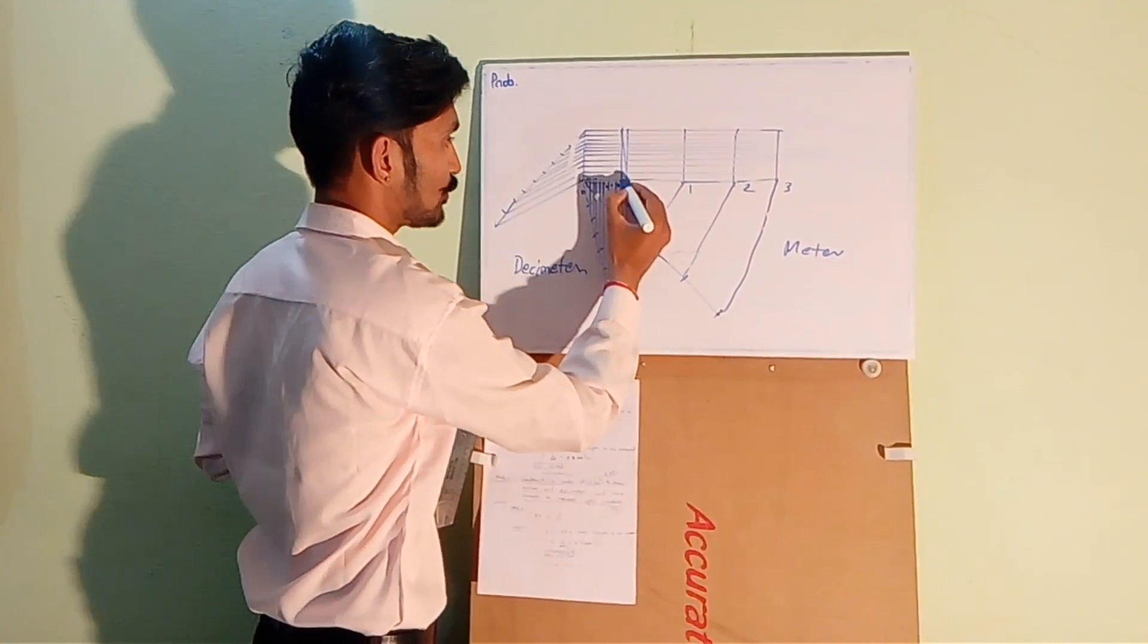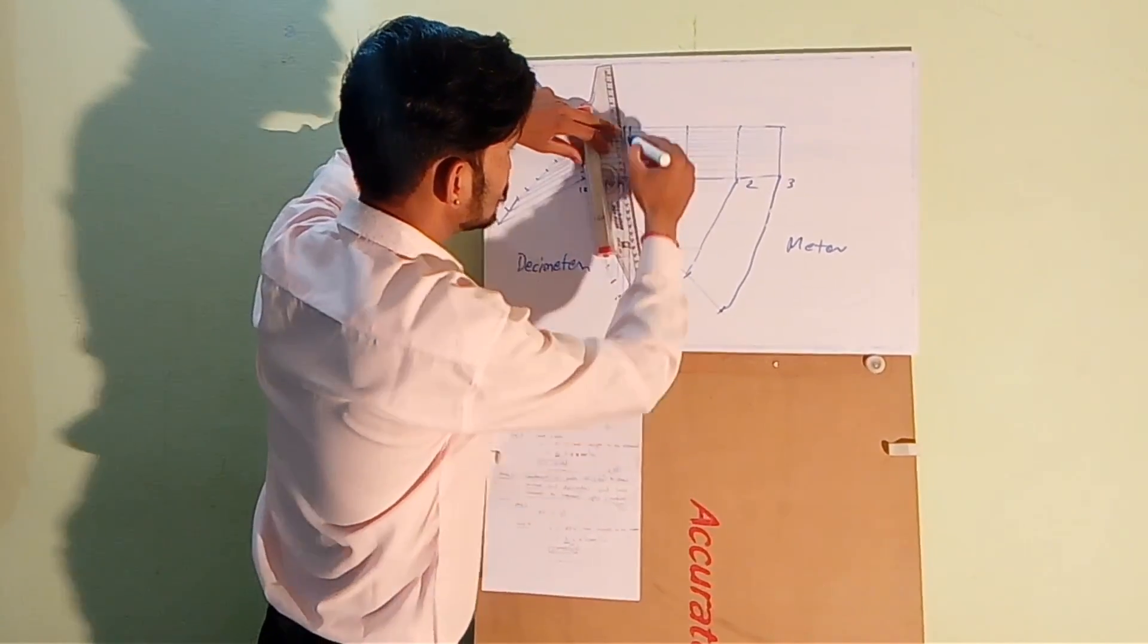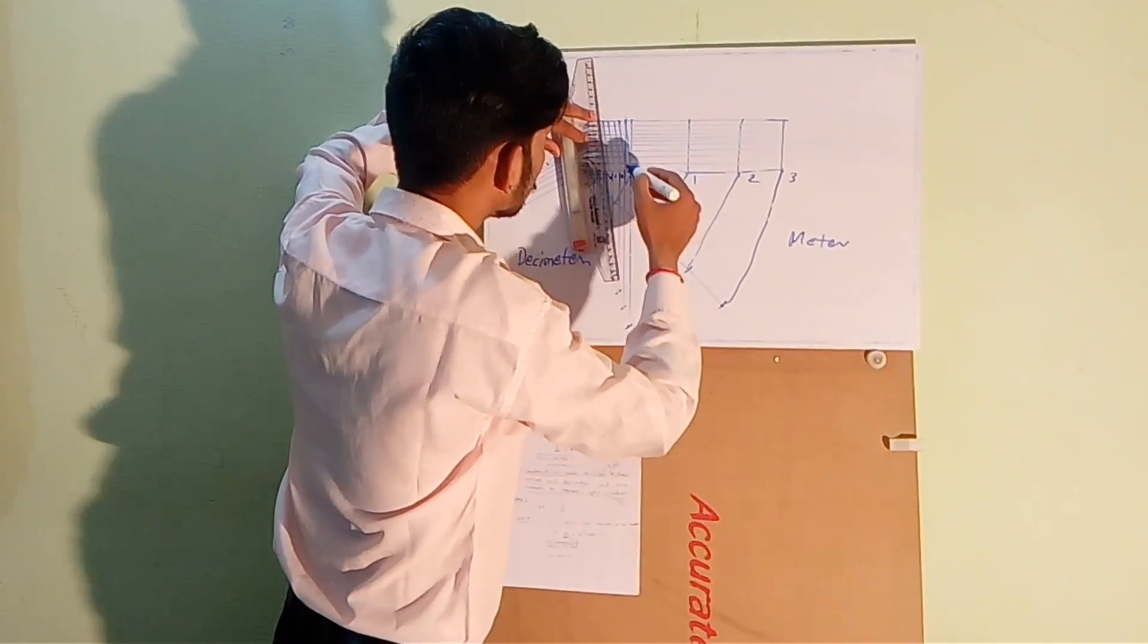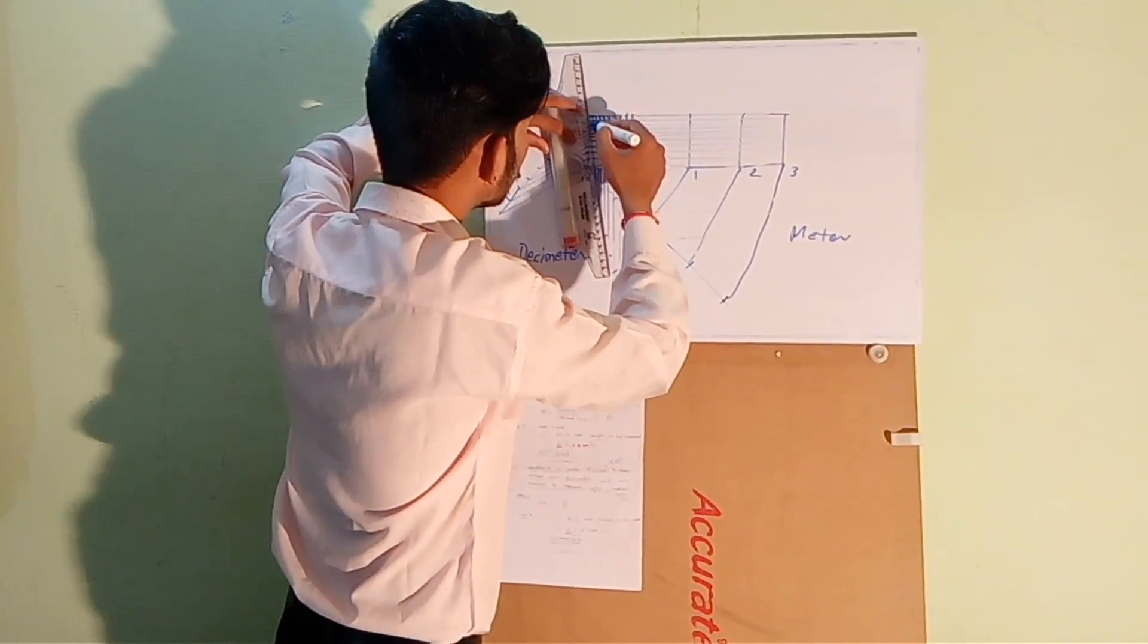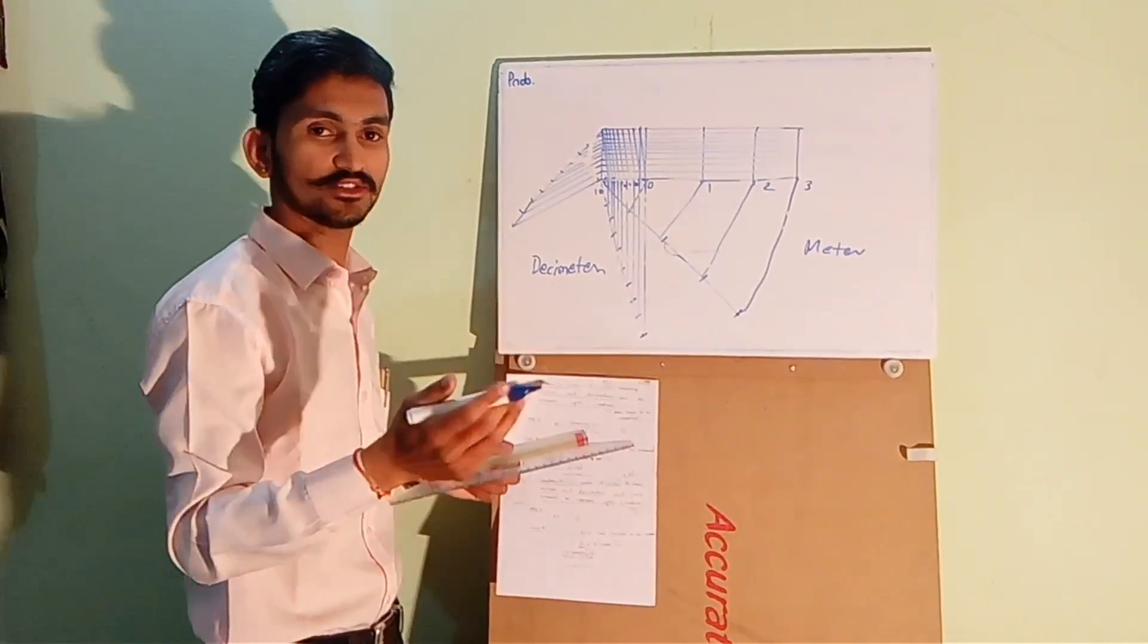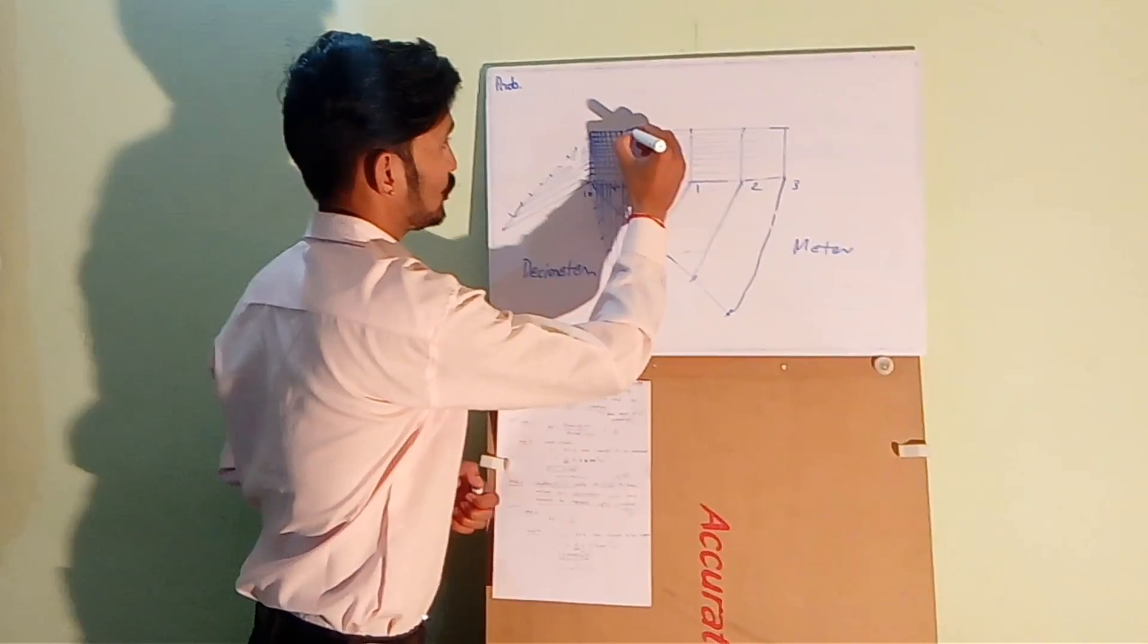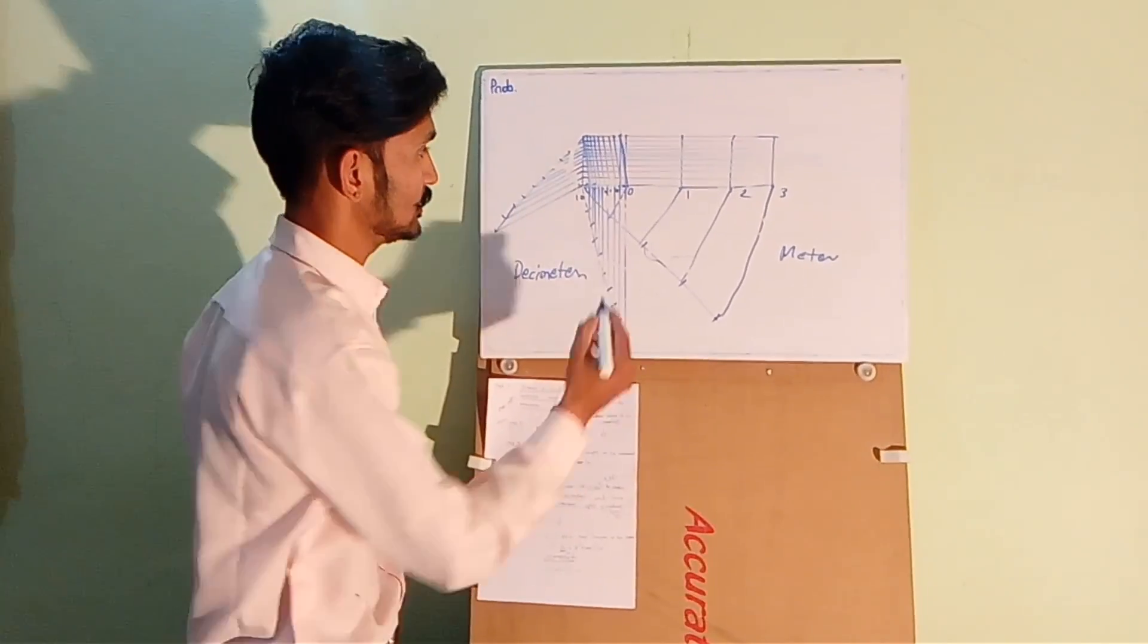Now from each point, from 0, from 1, 2, 3, up to 10, we will draw parallel lines to this line. Actually, this is very rough. But you need to do it very clearly and accurately on the drawing sheet.